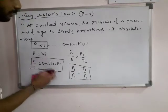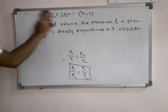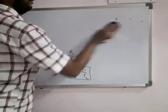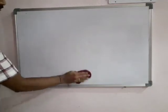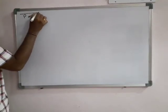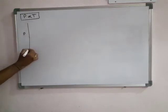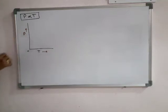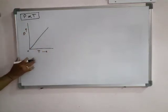Now we see the graphs related to this. Our basic equation is P proportional to absolute temperature. By plotting a graph between pressure and absolute temperature, since they are directly proportional, we will get a straight line passing through the origin.